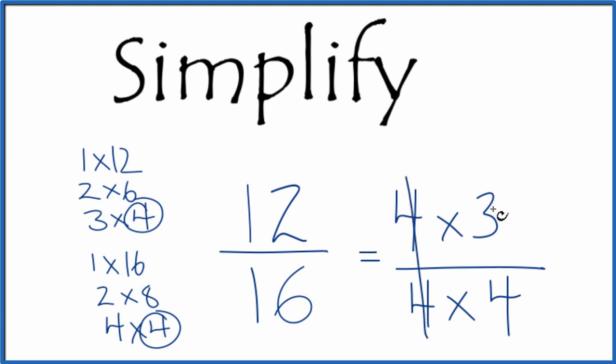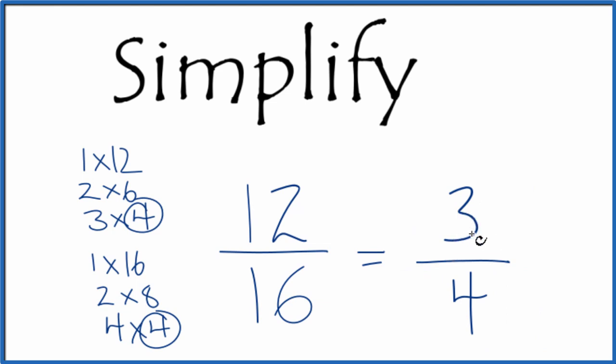We're left with 3 fourths. So when we simplify 12 over 16, we get 3 over 4. These fractions are equivalent; they have the same value. 12 divided by 16 and 3 divided by 4 both equal 0.75.